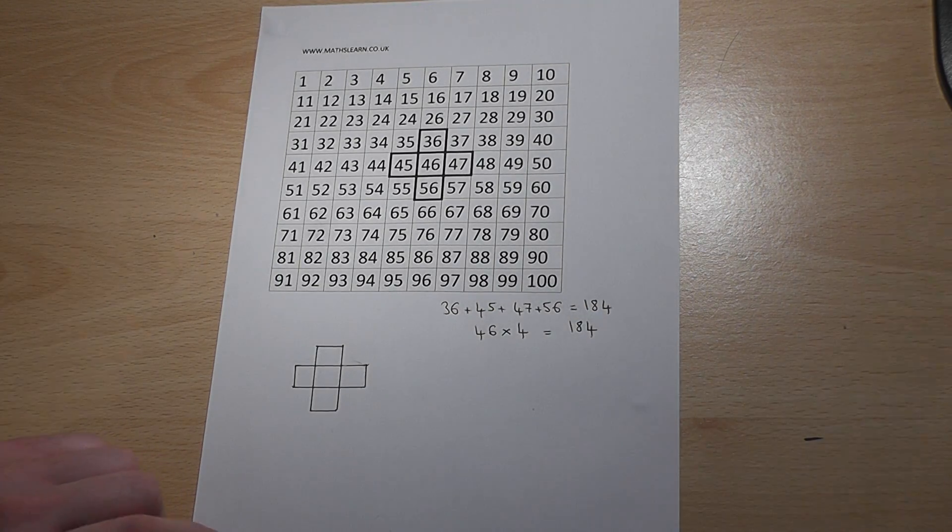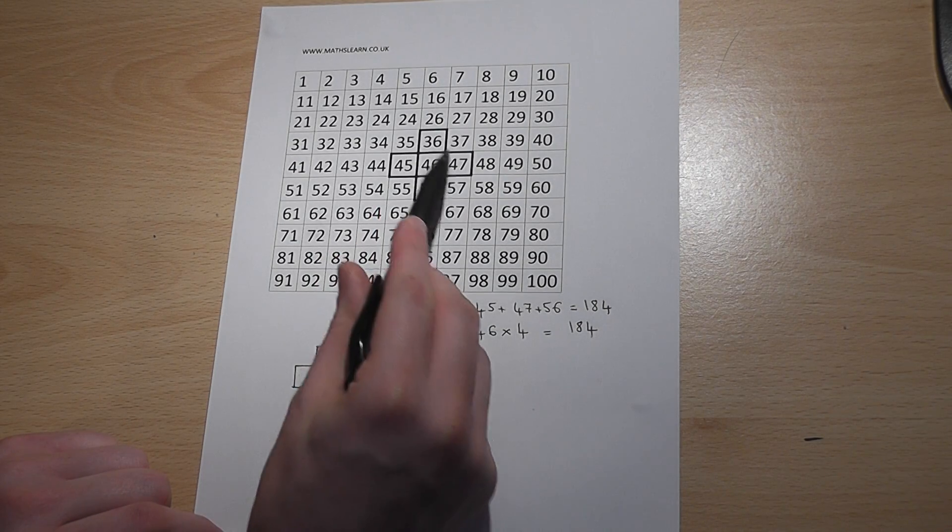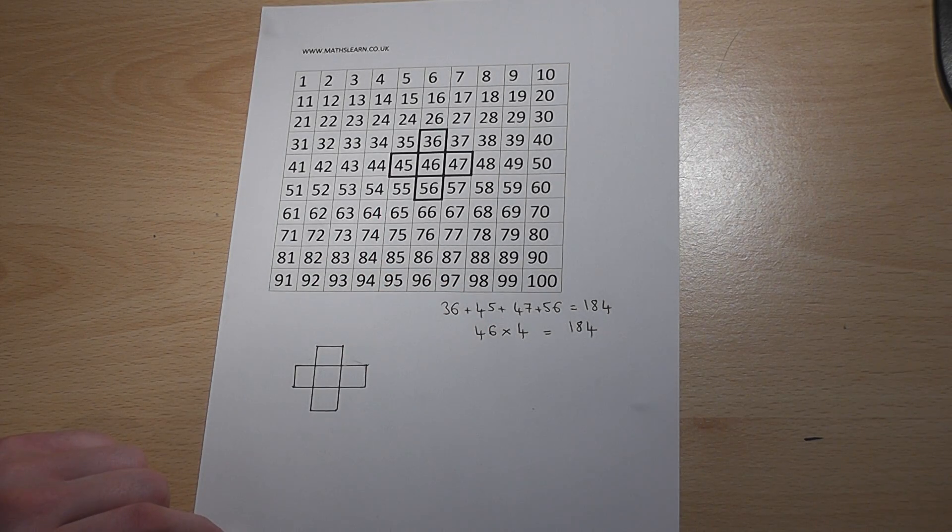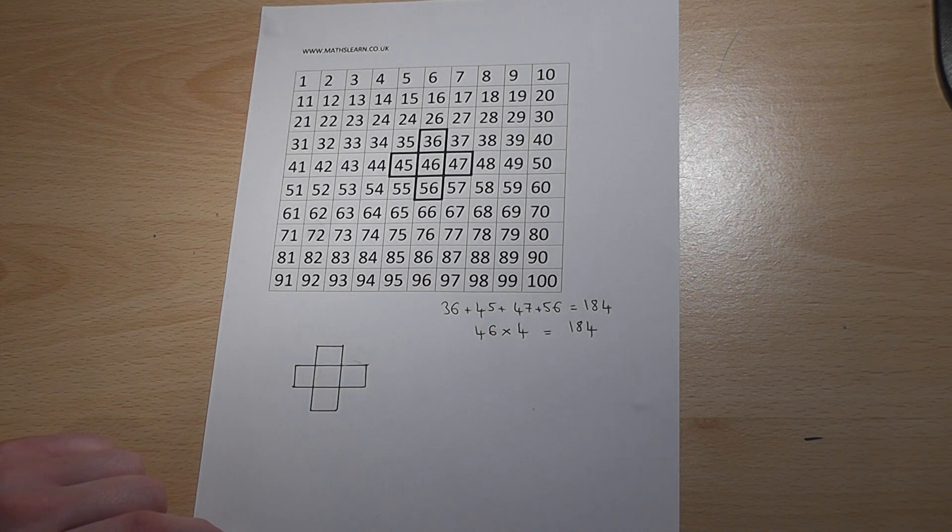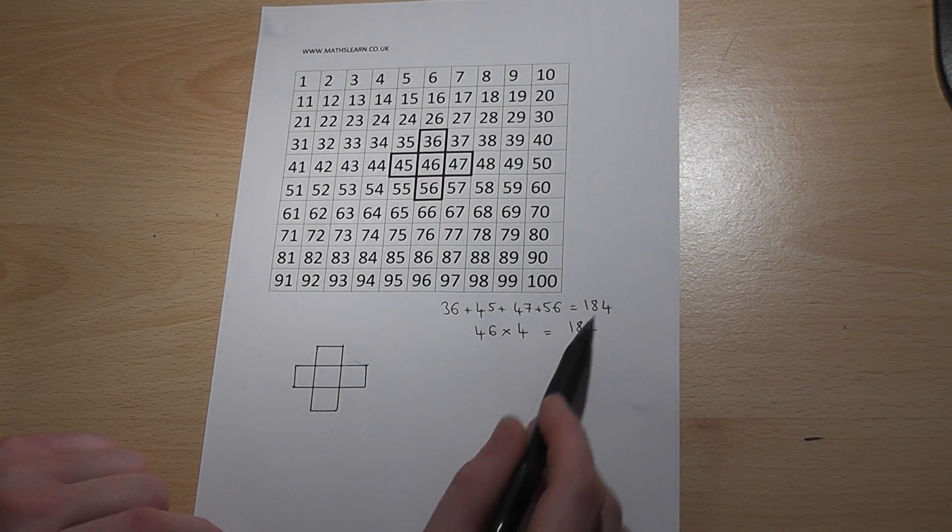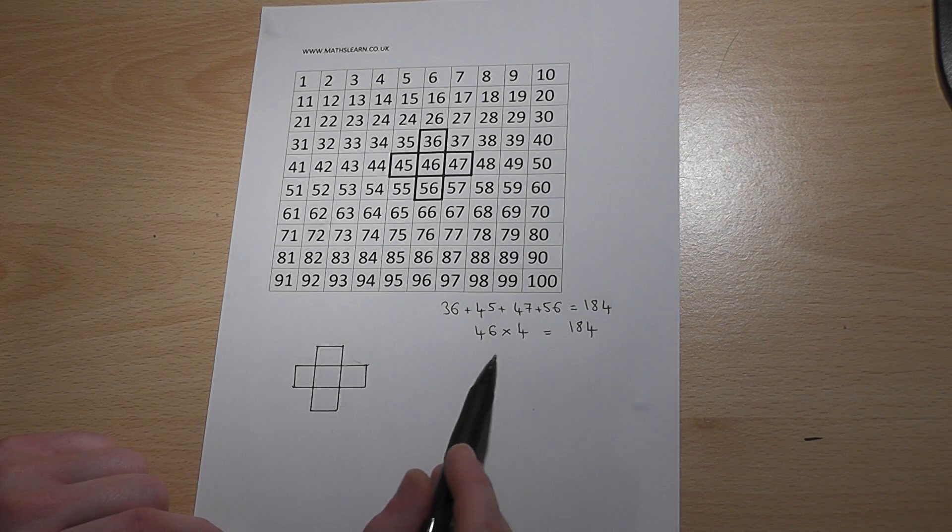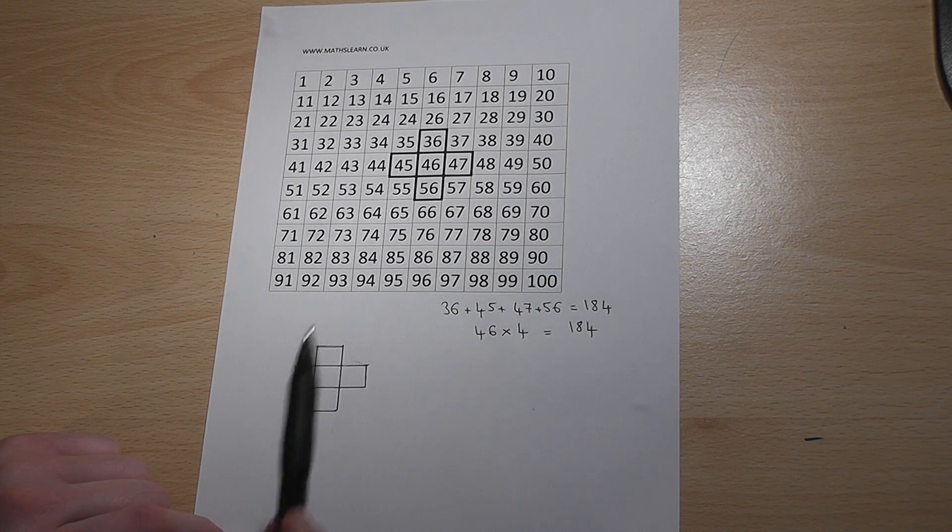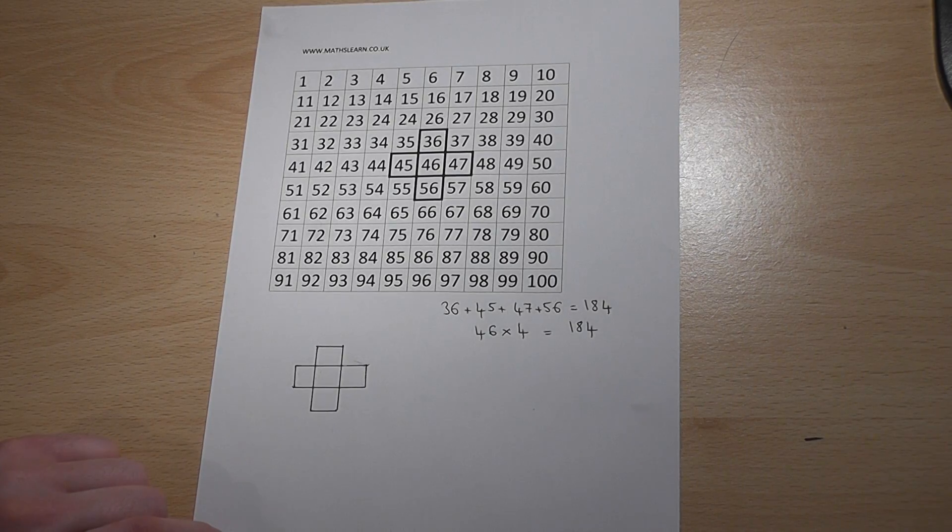So it appears that if you add up the four outer numbers, the answer is four times the inner number. And wherever we draw this cross on the grid, whilst the answer will change, it will always equal four lots of the centre number.